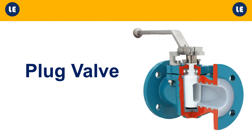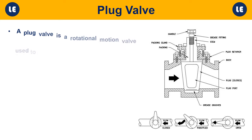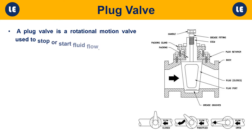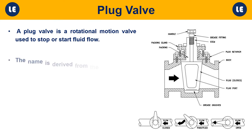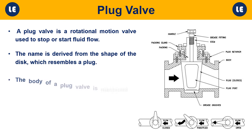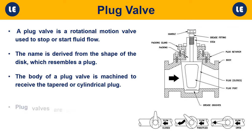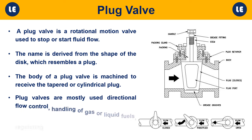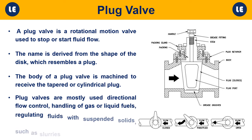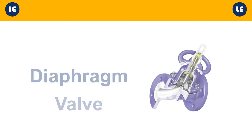Plug valve: A plug valve is a rotational motion valve used to stop or start fluid flow. The name is derived from the shape of the disc, which resembles a plug. The body of a plug valve is machined to receive a tapered or cylindrical plug. Plug valves are mostly used in directional flow control, handling of gas or liquid fuels, regulating fluids with suspended solids such as slurries, or handling low-pressure, low-temperature services.